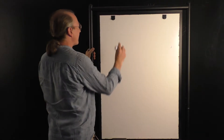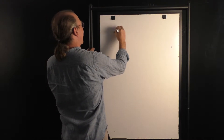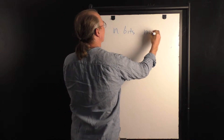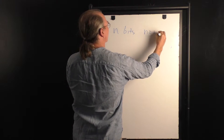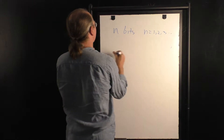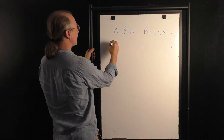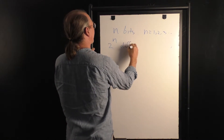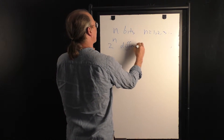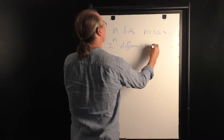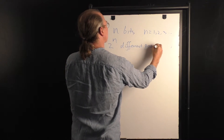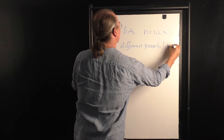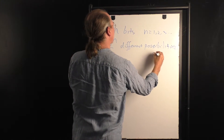So if I go to more bits — if I have n bits, where n is equal to 1, 2, 3, etc. — what it means is that I have 2 to the n different possibilities, or sometimes called states.